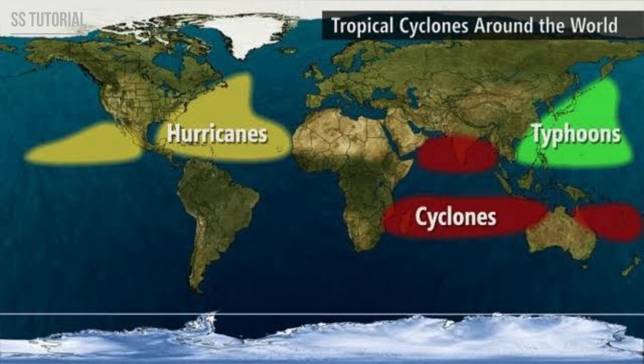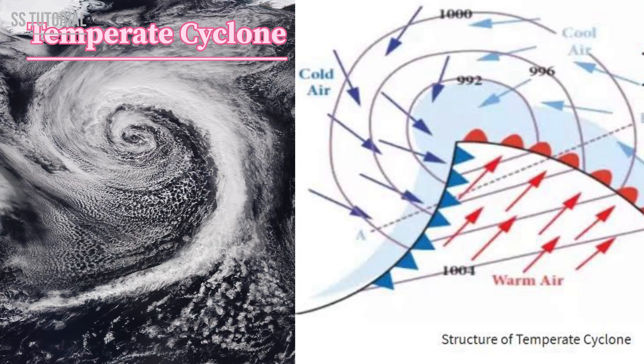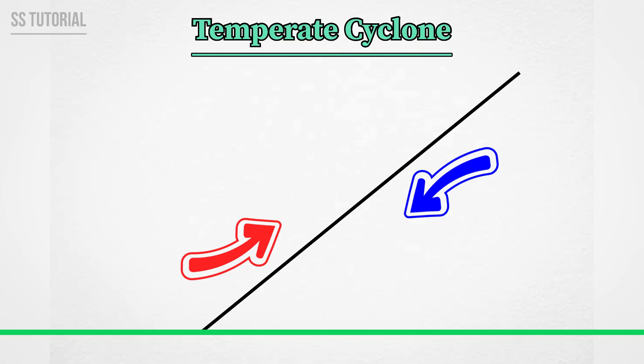Several tropical cyclones originate every year throughout the world and are known by different names in different places. A tropical cyclone is termed a 'cyclone' when it originates in the North Indian Ocean, a 'typhoon' when it forms in the Northwest Pacific Ocean, and a 'hurricane' when it originates in the North Atlantic and Central North Pacific Ocean.